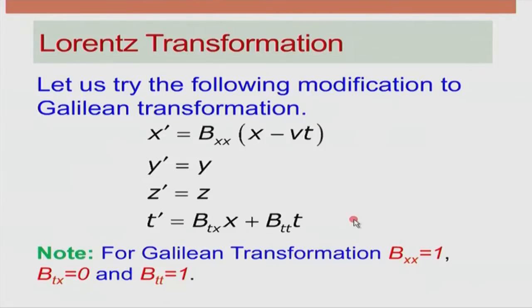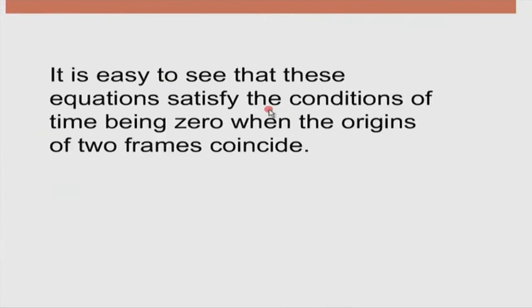We start from this particular point. I have introduced three constants: bxx multiplying (x minus vt), and t prime made dependent on both x and t via constants btt and btx. These equations satisfy the condition that at t = t prime = 0 the origins of the two frames coincide, with relative velocity only along the x direction, y and y prime parallel, z and z prime parallel. It is easy to see that these equations satisfy that condition.